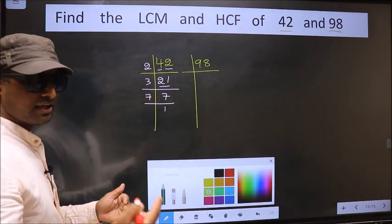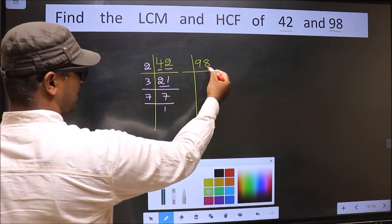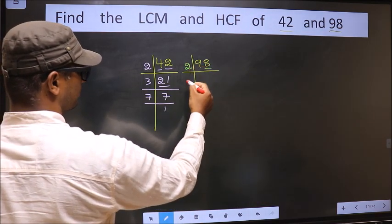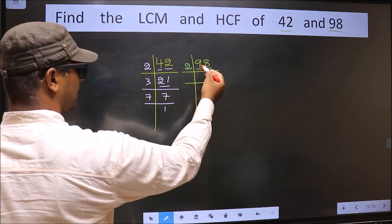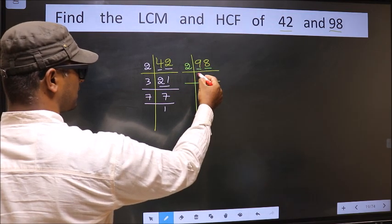Now the other number. Last digit 8, even, so we take 2. The first number 9, a number close to 9 in 2 table is 2 times 4 is 8.